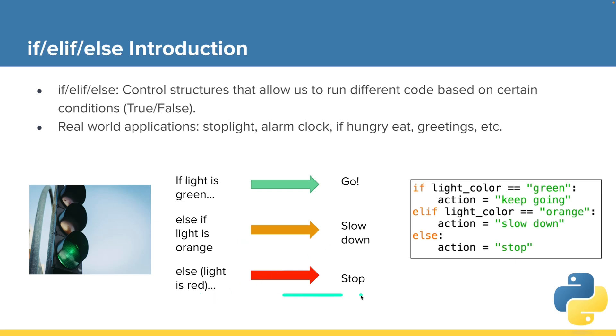Otherwise, stop, assuming that the light is red. And here it is mapped out in Python.